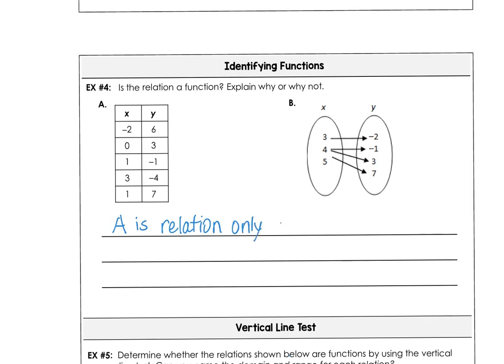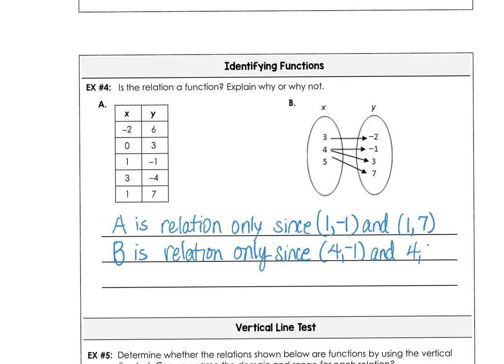And the reason is because we map 1 to negative 1 and we also map 1 to positive 7. So it's going to fail the vertical line test. And b is also just a relation. And the reason that b is only a relation is similar reasoning. Because 4 maps to negative 1 and 4 also maps to positive 3. So we have the same x with different y values. And we could also say that they fail the vertical line test. Same x with different y values and they fail the vertical line test.